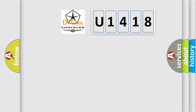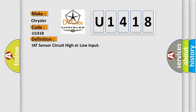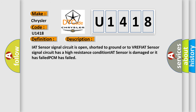So, what does the diagnostic trouble code U1418 interpret specifically for Chrysler car manufacturers? The basic definition is IAT sensor circuit high or low input. Here is a short description of this DTC code: IAT sensor signal circuit is open, shorted to ground or to VREF. IAT sensor signal circuit has a high resistance condition. IAT sensor is damaged or it has failed. PCM has failed.